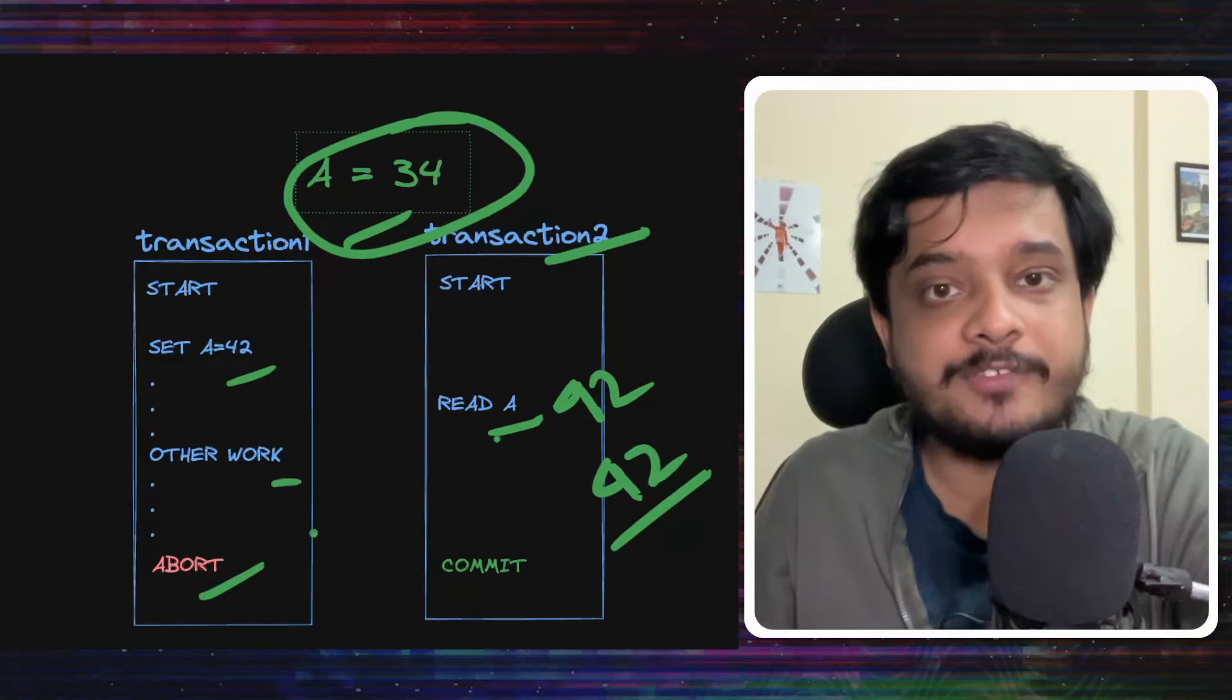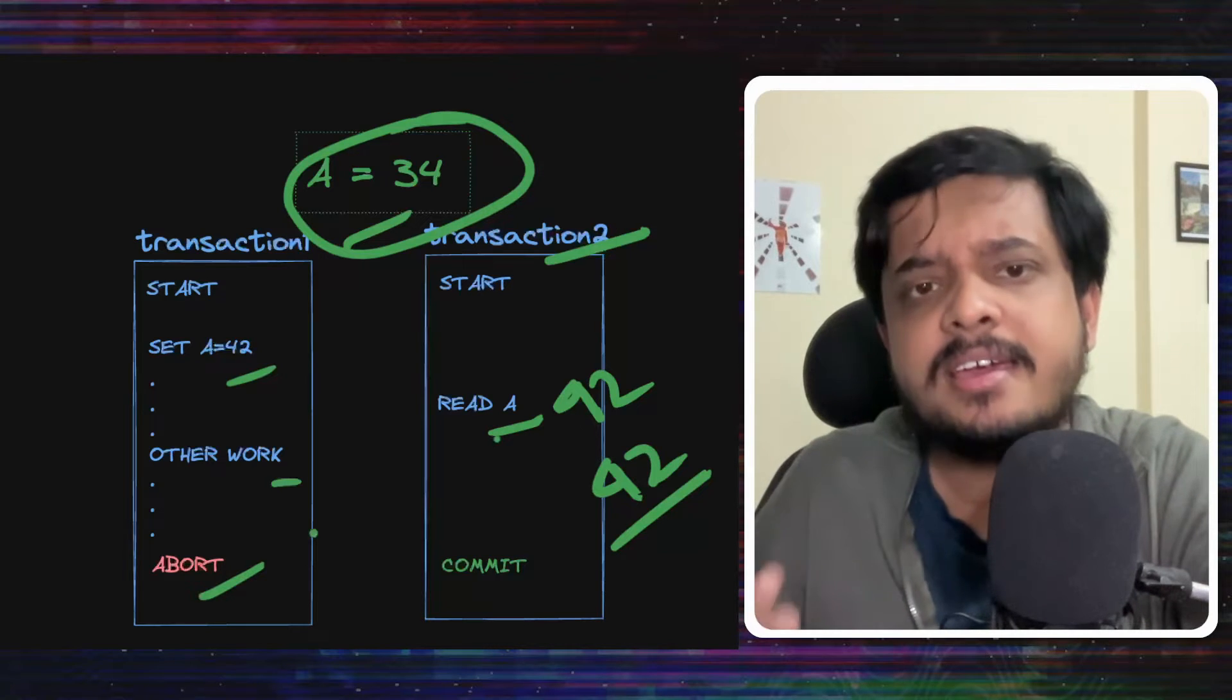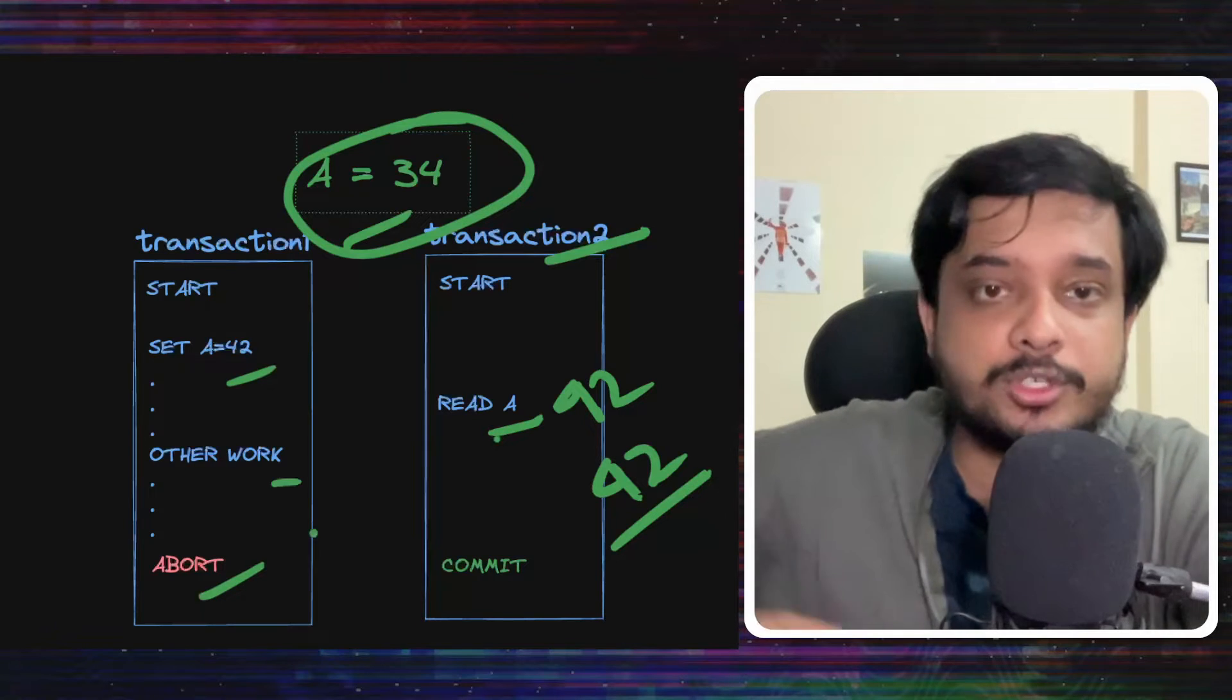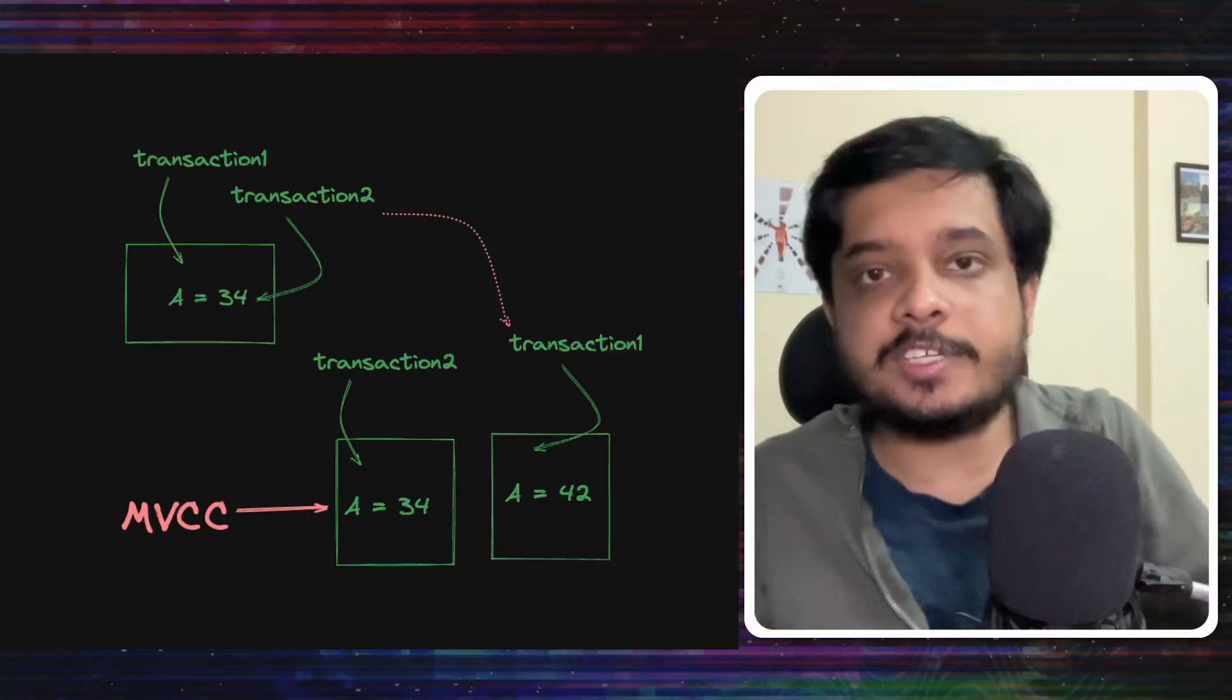There are many methods to prevent concurrency conflicts. And one of them, perhaps the most popular one currently, is multi-version concurrency control or MVCC. All popular databases like Postgres and MySQL use this. Let's get the fundamental idea behind MVCC.